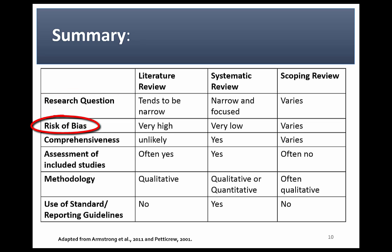Regarding risk of bias, narrative reviews carry the highest risk of bias due to their lack of rigorous methodology. Systematic reviews carry the lowest risk of bias, but a well-conducted scoping review may borrow much of the systematic review methodology, and may therefore also be relatively unbiased.